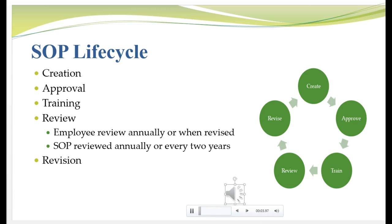SOPs have a life cycle. SOPs tend not to be static documents — our processes and technology in the clinical research area are changing constantly, and because of that our SOPs need to change so that they describe the current practice. SOPs typically go through a cycle of creation, then they are approved, individuals train on them, and then if the SOP stays static, the employee will review that SOP annually. If it changes, they will have to review the revised SOP, and the SOP itself is typically reviewed annually or every two years to make certain the procedures outlined are still valid.